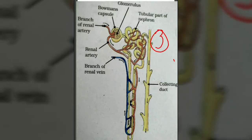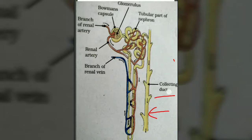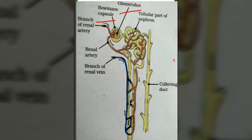The third important part of the nephron is this yellow pipe known as the collecting duct. Quick revision: the nephron has three important parts — first, the Bowman's capsule containing the porous capillary network called the glomerulus; second, the tubular part containing PCT, the hairpin loop, and DCT; and third, the collecting duct.